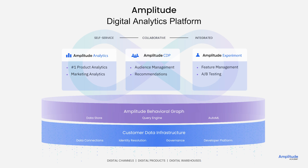From there, you can analyze and share your insights using a multitude of visualization and collaboration tools with Amplitude Analytics. Amplitude's Customer Data Platform, or CDP, features audience management and recommendations that allow you to build dynamic user lists, discover and activate new audience segments, and automate campaign targeting. And you can A/B test, or see how new features perform, with Experiment.